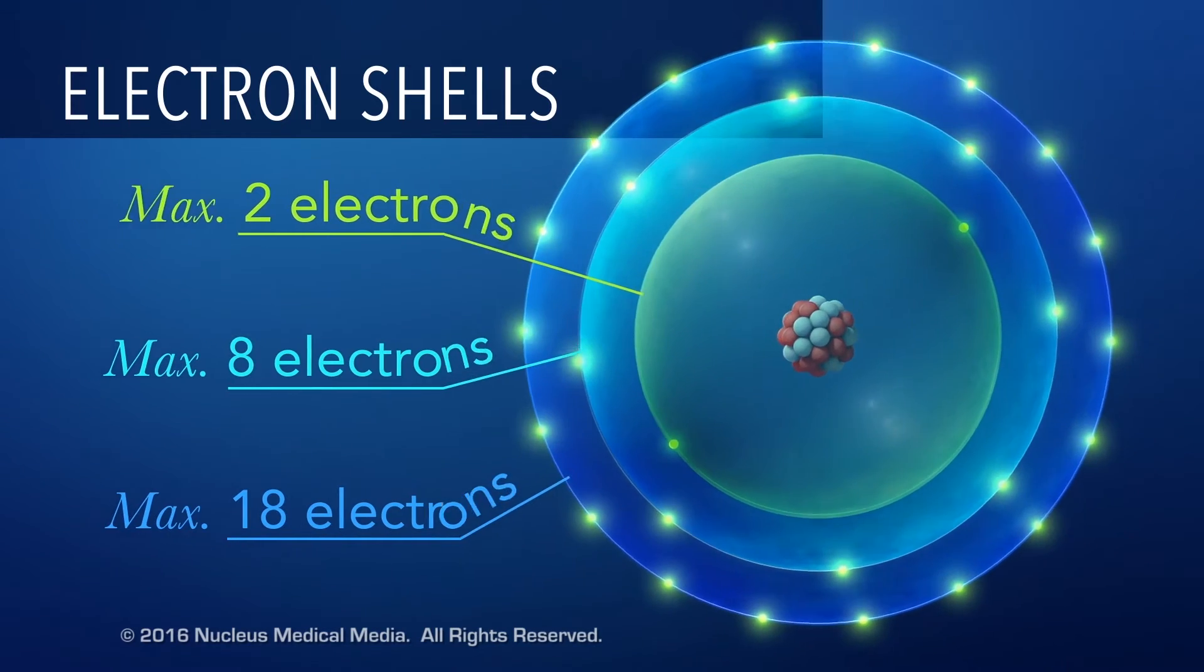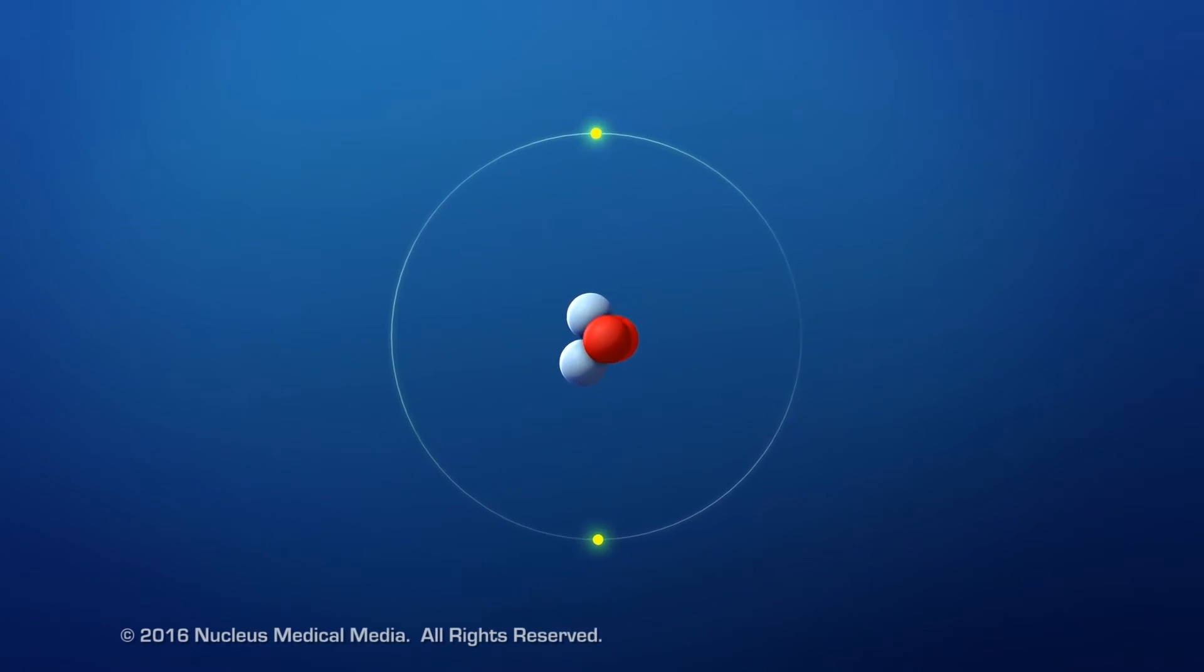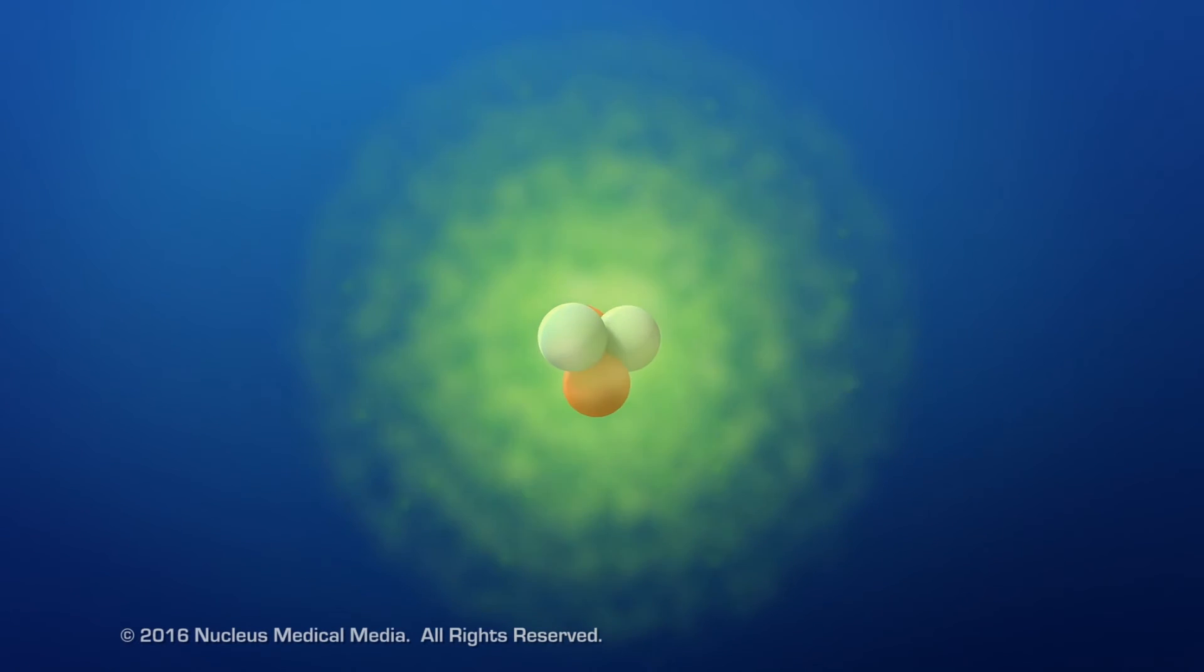For simplicity, diagrams of atoms often show electrons within these shells while orbiting the nucleus. However, since we can only know the probability of where they might be located, electrons are sometimes depicted as smeared out and fuzzy. This fuzzy view of electrons is called an electron cloud.